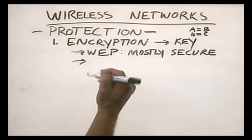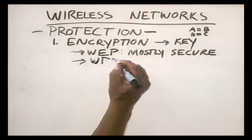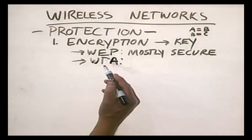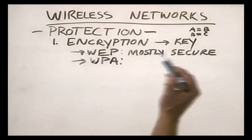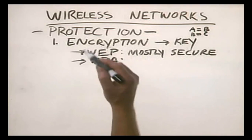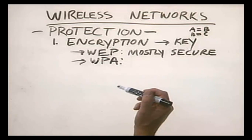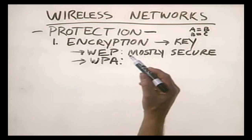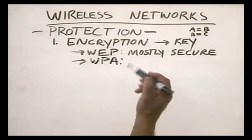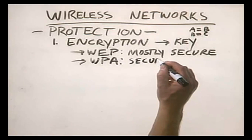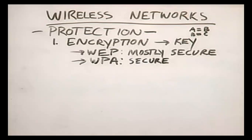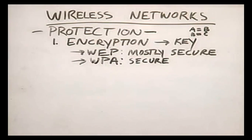A better alternative — and if you're setting up a wireless network in an organization you should use this if you have the option — is WPA, which stands for Wi-Fi Protected Access. WPA addresses most of the weaknesses found with WEP. It does not include part of the key at the beginning of every packet, and it also rotates the key constantly, so a new key is created periodically and all systems are automatically updated. Additionally, WPA supports user authentication with a username and password, making it much more secure.